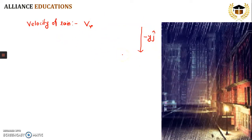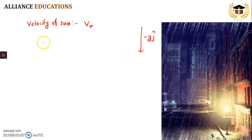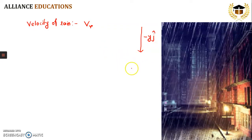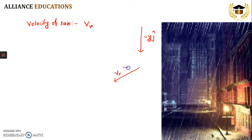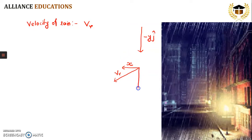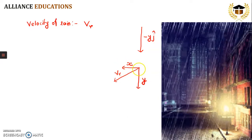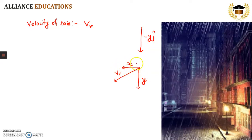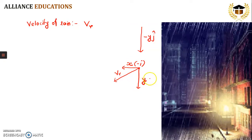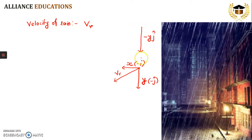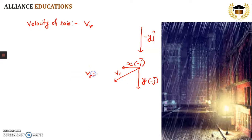But if oblique rainfall happens, then as you can see, rainfall happens obliquely in some direction. This is the velocity of rain, and we can see it in two components — the x-component and the downward y-component. Because we have the negative direction of the x-axis and the negative direction of the y-axis (minus j), velocity of rain can be represented as minus xi minus yj.